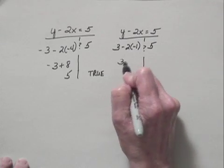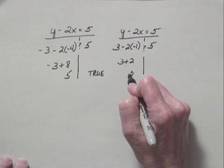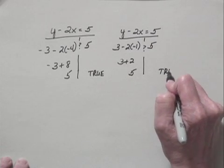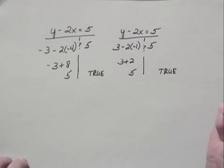Here on the left side I have 3 plus 2, and that is equal to 5. So this is also a true statement, and that tells us that both points are solutions of the equation.